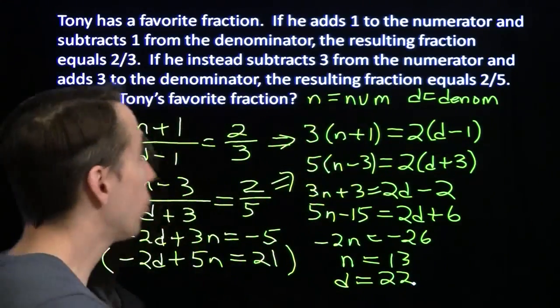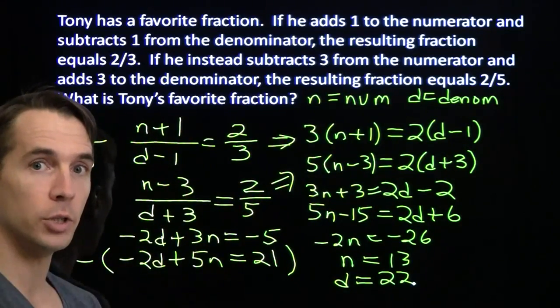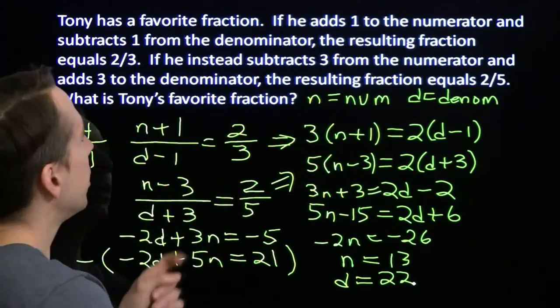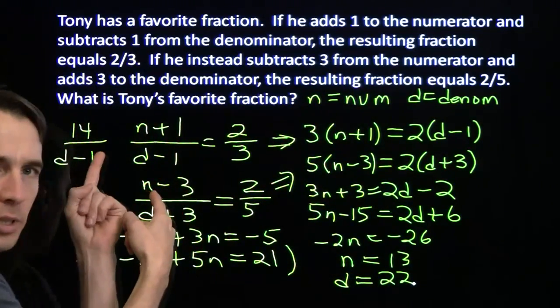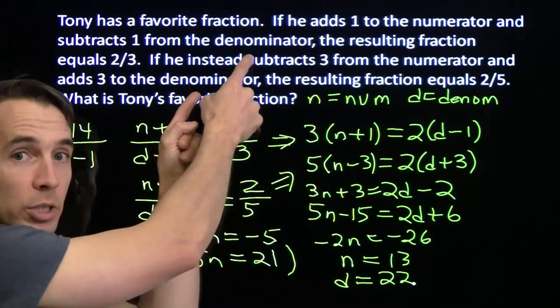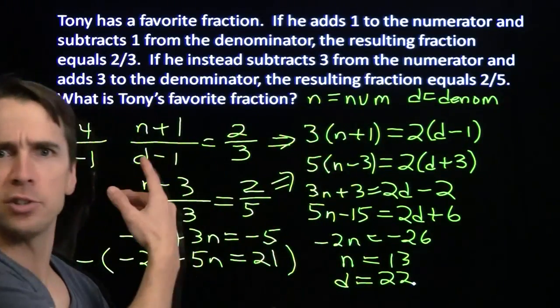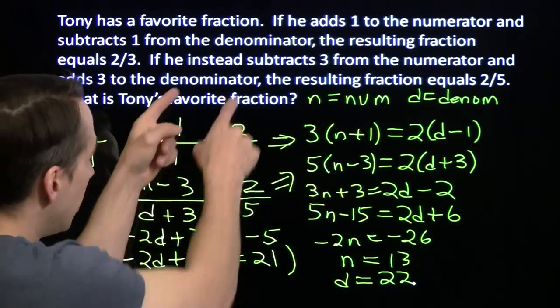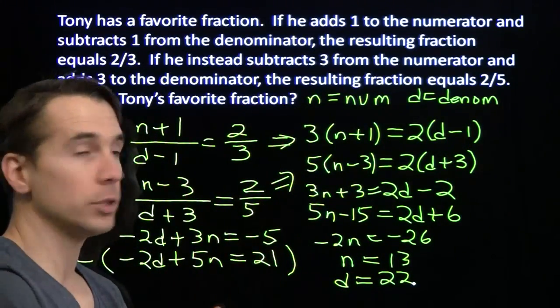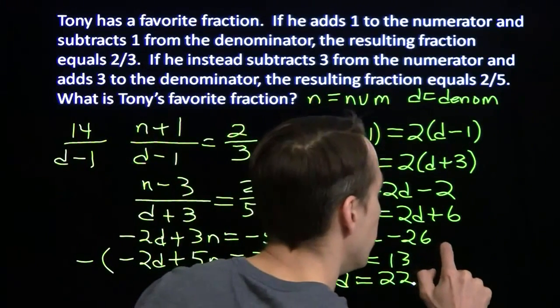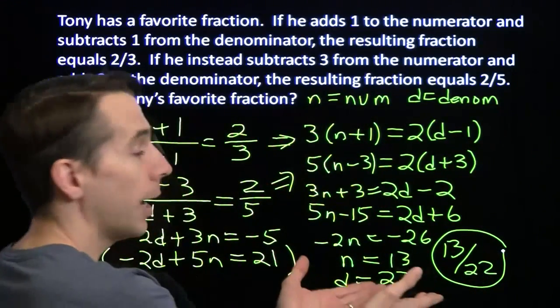Now we can go back and check real quick. Adds 1 to the numerator, that gives us 14, subtracts 1 from the denominator, that gives us 21. 14 over 21, that's 2 thirds. That's what we did right up here. If he instead subtracts 3 from the numerator. Now notice that when I'm checking this, I'm not checking this by putting these in the equations. I'm checking this by going back to the original problem. Because if we set up the equations incorrectly, we may solve the equations just fine, but still get the wrong answer. When we're checking, we're going back to the original problem. Subtract 3 from the numerator, you get 10. Adds 3 to the denominator, you'll get 25. 10 over 25, 2 fifths. So Tony's favorite fraction is 13 over 22, and we are done.